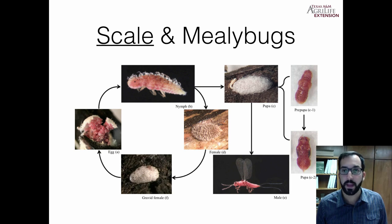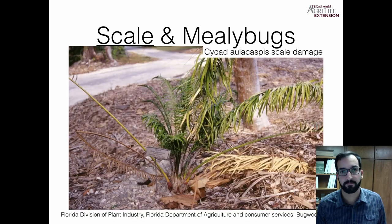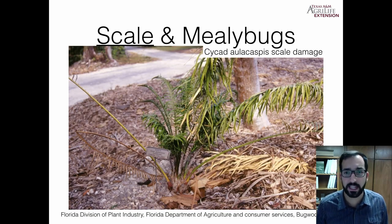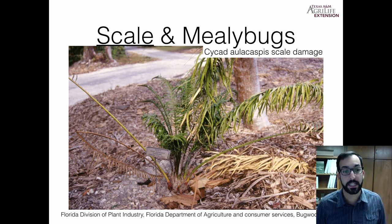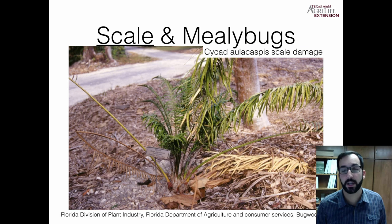In the scale life cycle, the first stage of nymph is called a crawler and is typically rather mobile. After that it has very limited mobility. The female goes into a female egg sac where she withers and dies, producing all those eggs. The cycad scale is one of those scales that can actually kill a cycad, so that needs to be managed or you're going to lose your cycad.